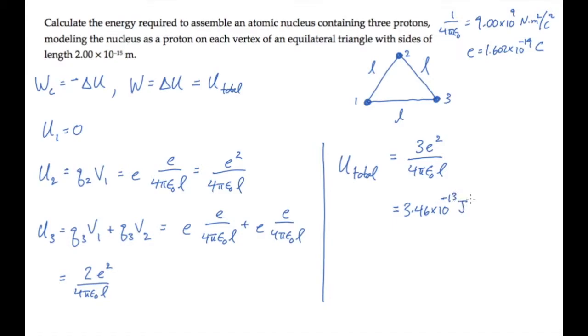It's common to express these energies in terms of electron volts, so I'll show that conversion here. One electron volt is 1.602 times 10 to the minus 19 joules, so we find that the work required to assemble this nucleus is 2.16 mega electron volts.